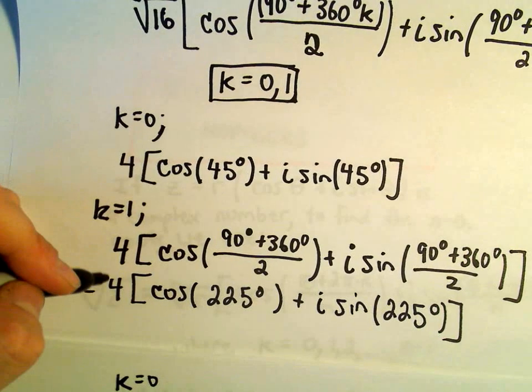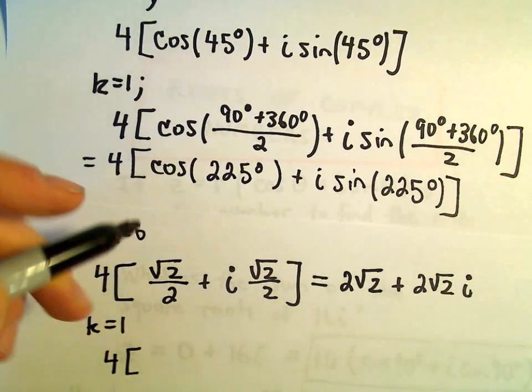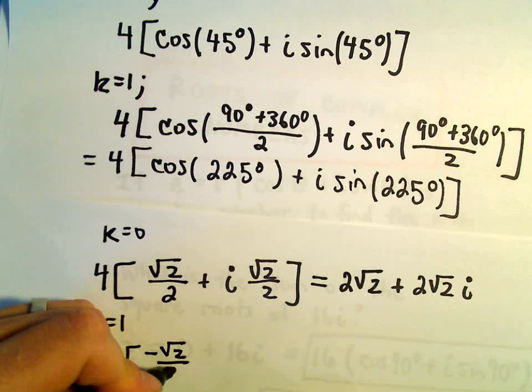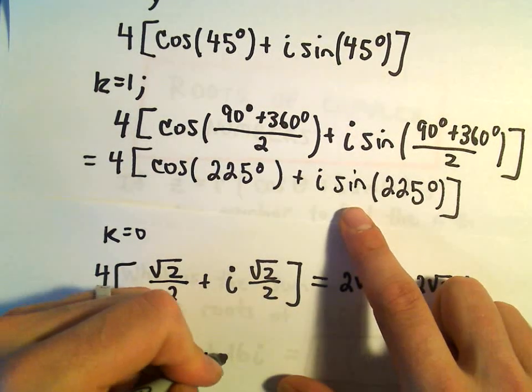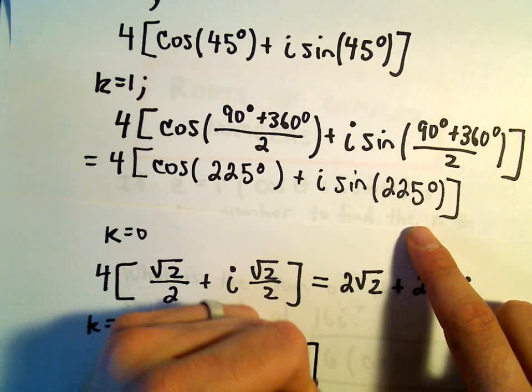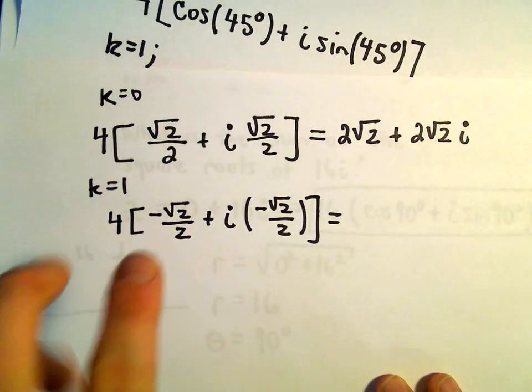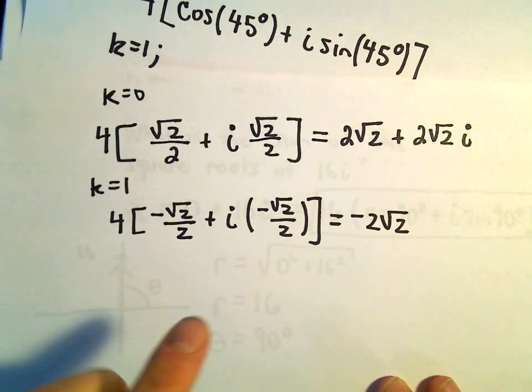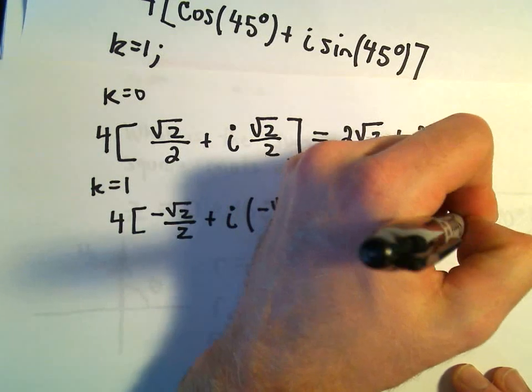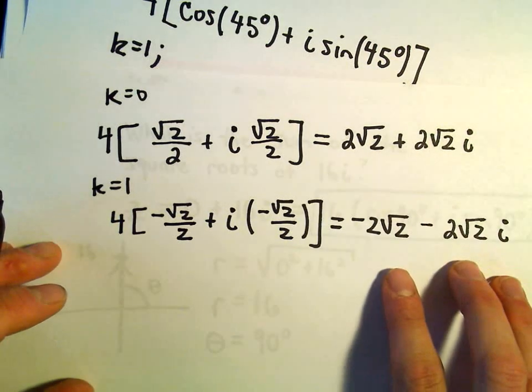So, when we plug in k equals 1, we've got 4 times cosine of 225 degrees. Cosine of 225 degrees is going to be negative root 2 over 2. And, in this case, when we distribute out the 4, we'll be left with, well, negative 2 root 2. And then, when we distribute the 4 to our second term, again, we'll get a negative 2 root 2 i. So, those are our two roots in this case.